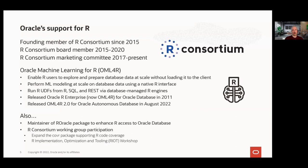How does Oracle support the R community? We've been a member of the R Consortium since its inception in 2015, with board membership from 2015 to 2020 and current participation on the marketing committee. To help R users work more seamlessly with their database data, we introduced Oracle Machine Learning for R. With OML for R, Oracle continues to enhance the ability of R users to take advantage of powerful database capabilities from the convenience of R. We also contribute to open source R packages and participate in R Consortium working groups.